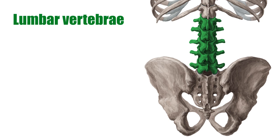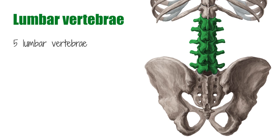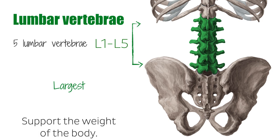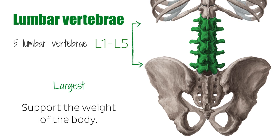There are five lumbar vertebrae found in adult humans, denoted as L1 to L5, and they are situated beneath the thoracic vertebrae. They are the largest in size of all the vertebrae, since the lumbar vertebrae must be able to support the weight of the body when a person is standing, due to the effects of gravity.